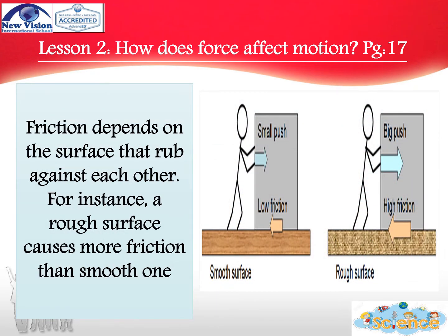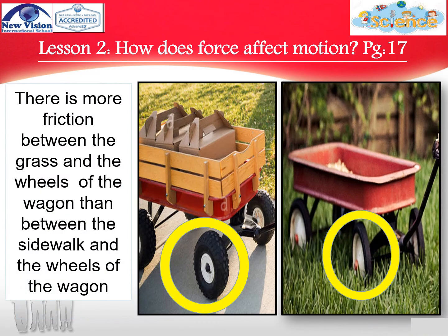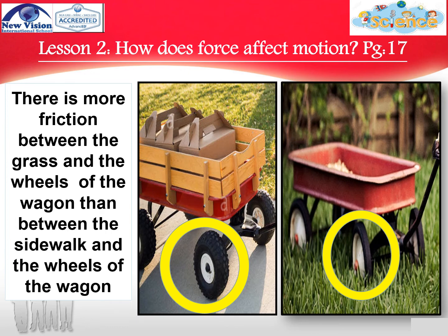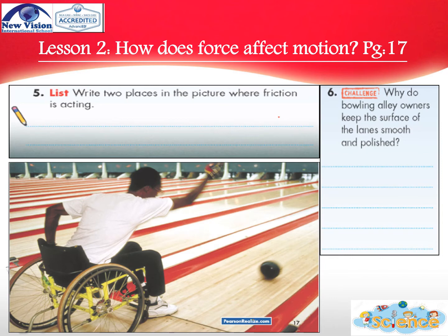Friction depends on the surfaces that drag against each other. For instance, a rough surface causes more friction than a smooth one. Please look at the pictures — you can see that there is more friction between the grass and the wheels of the wagon than between the sidewalk and the wheels of the wagon. Have you ever seen a person operating a wheelchair? They can use friction to control the motion of the wheelchair. When the wheelchair is moving, the operator can drag his hands on the hand rims that rotate along with the wheels, and friction between the hands and the moving rims will cause the wheelchair to slow down.